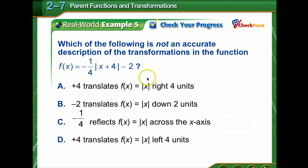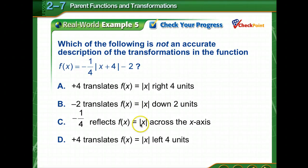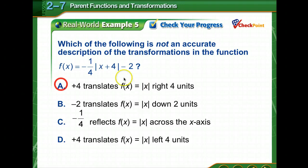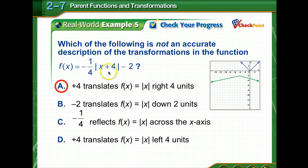Now describe which is NOT an accurate description of the transformations in this function. Pause and decide which one doesn't fit. The positive 4 inside means it's going left four units — that's correct. Negative one-fourth reflects across the x-axis — correct. Negative 2 means it goes down. What they're trying to confuse you on is the positive 4: they claim it goes right four units, but it does not — it's the opposite sign, so it goes left.